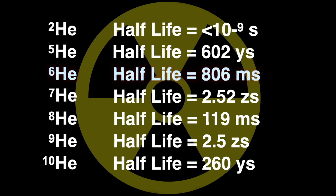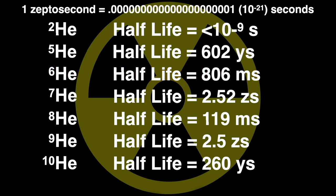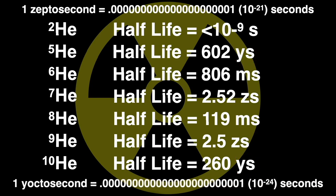The ZS stands for zeptoseconds. A zeptosecond is a billionth of a trillionth of a second, 10 to the minus 21 seconds. And YS stands for yoctoseconds, a trillionth of a trillionth of a second, 10 to the minus 24th seconds.